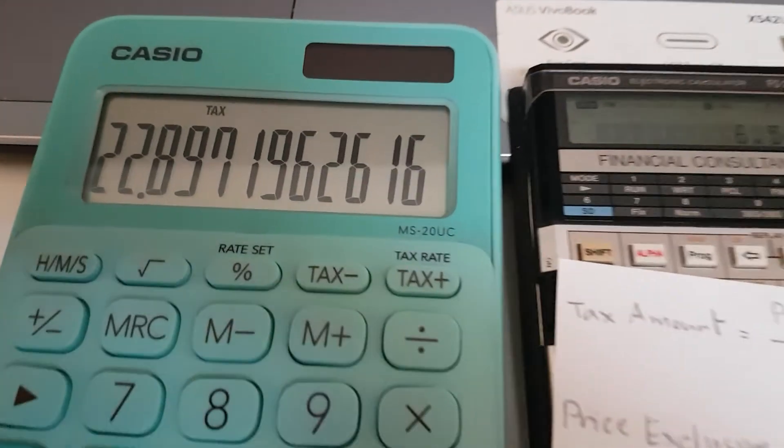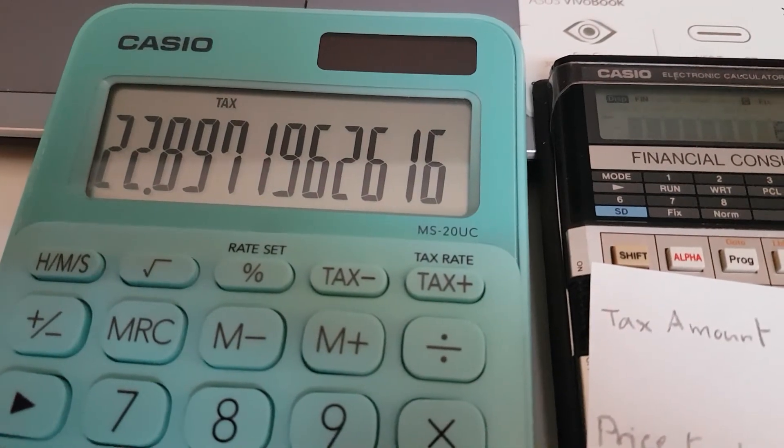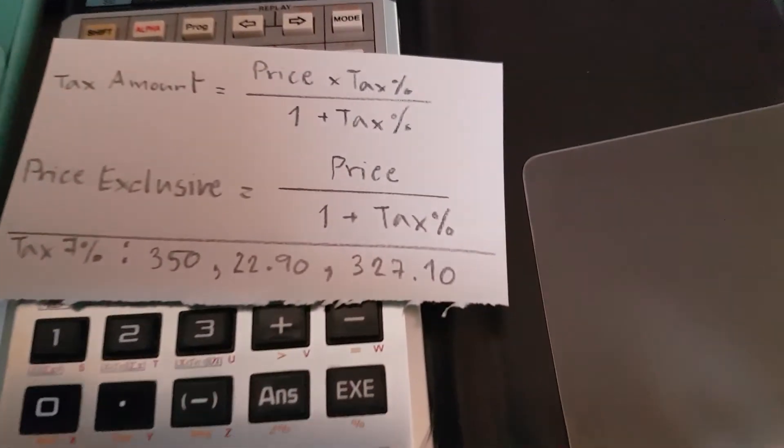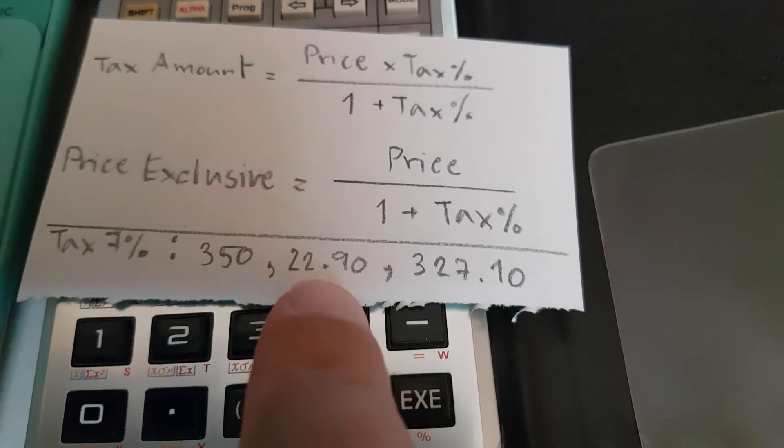And press tax minus, that's going to be 22.90. 22 and 90.